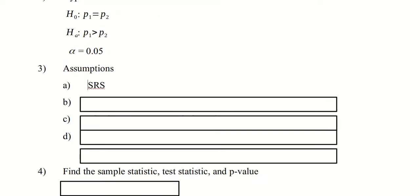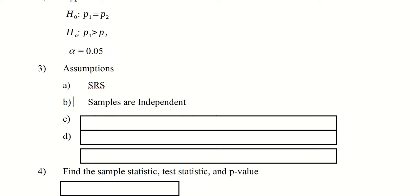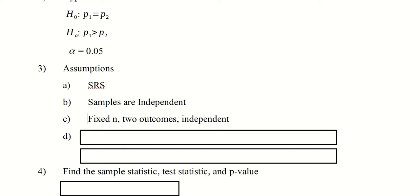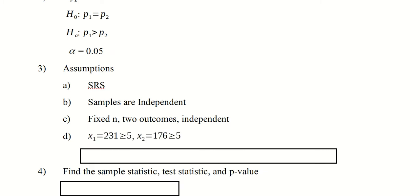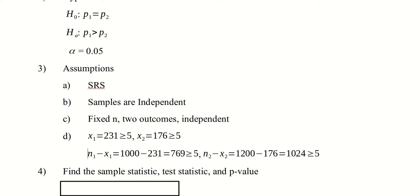The assumptions: we have a simple random sample — we were told they were randomly selected. The samples are definitely independent: one is of husbands and the other is of wives. We have all the binomial conditions met — a fixed number of trials, two outcomes, and independent, meaning one spouse choosing to cheat should not affect whether another spouse chooses to cheat. We also have to show we've got at least five successes and five failures. x is counting the number of married folks who cheated, so in both cases we've got at least five successes and five failures.